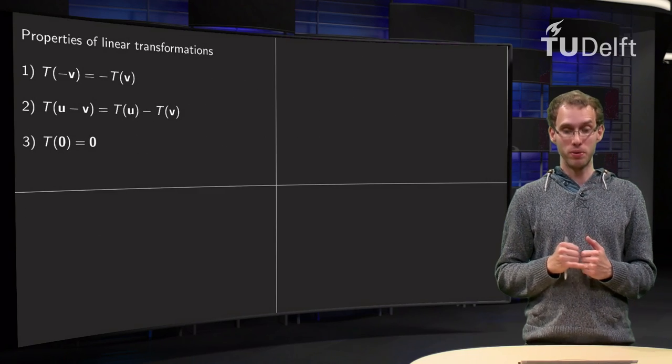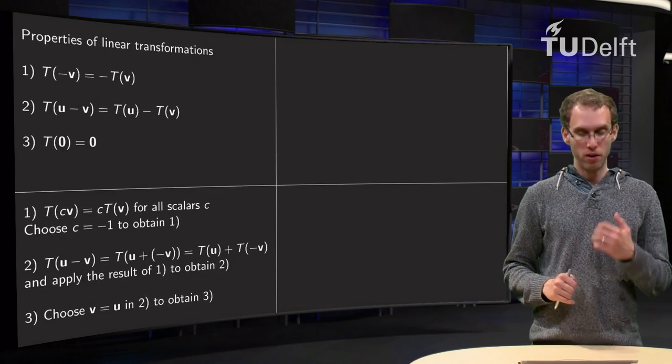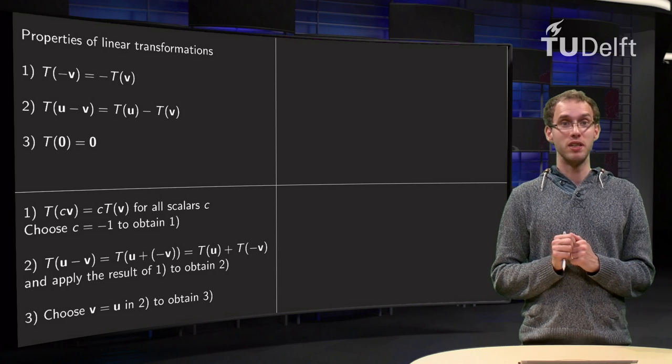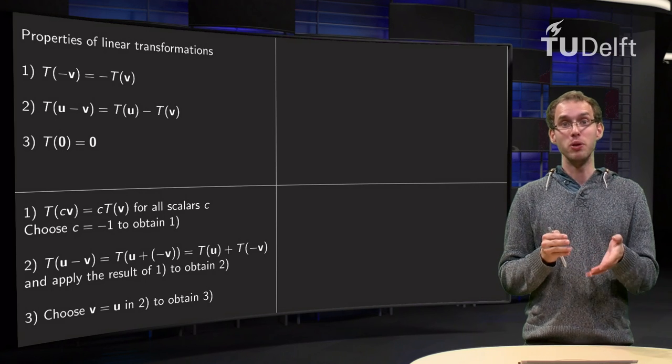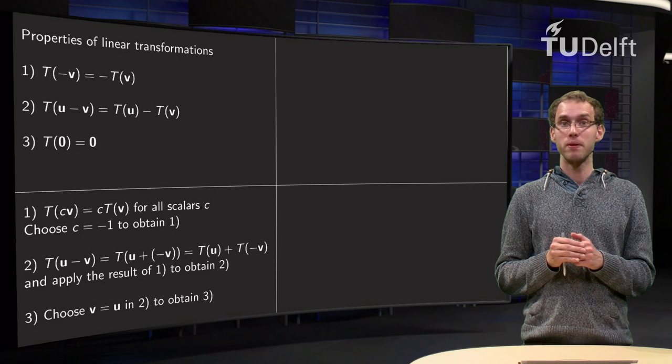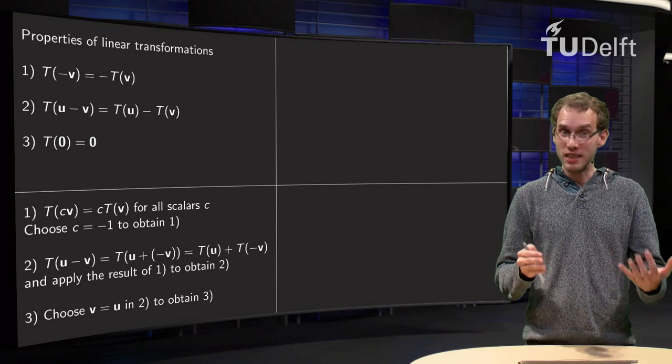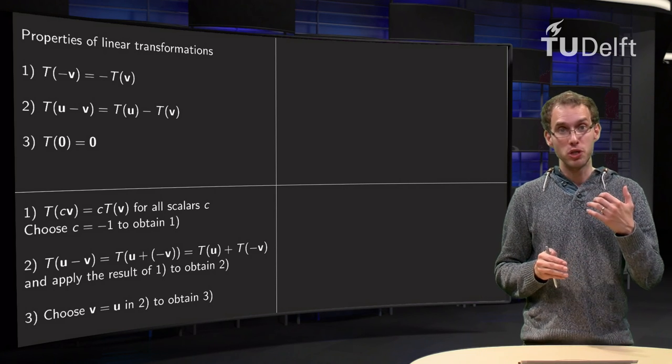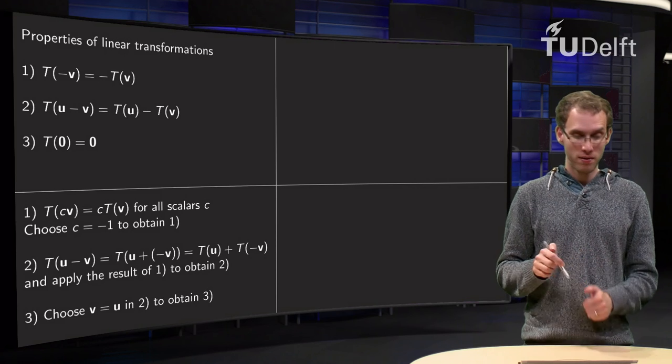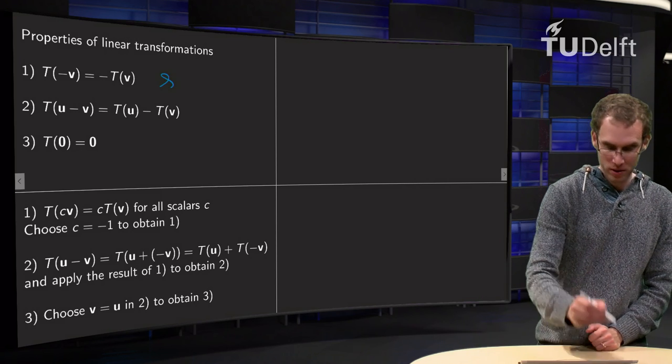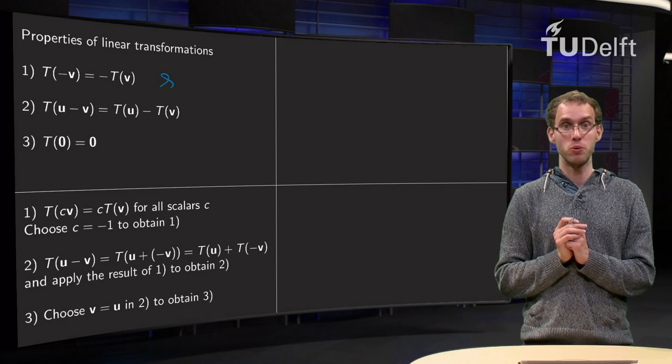Why are these properties true? First look at the first property. We know that T of c times u equals c times T of u, and we can choose any scalar c we like. So if we choose c equals minus one, we get exactly property one. That is why property one is true.